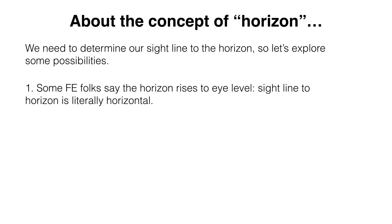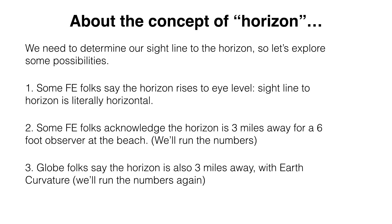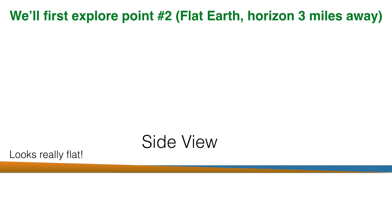There are a couple of possibilities. Some flat Earth folks say the horizon rises to eye level, so our sight line to the horizon is literally horizontal. Other flat Earth folks acknowledge that the horizon is three miles away for a six-foot observer. And of course, globe Earth folks say the horizon is three miles away but use Earth curvature. So we'll run the numbers for each. Let's explore number two.